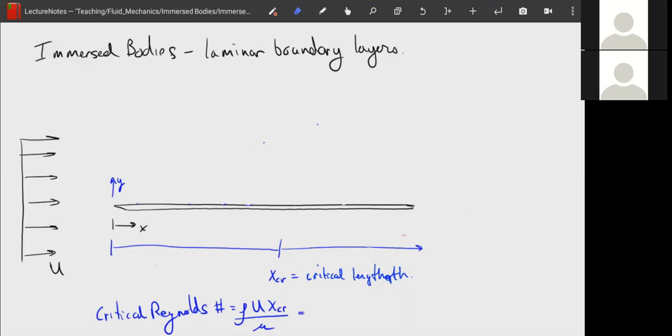So let's assume here we have a flat plate moving through a uniform flow here with a speed u. And if we were to look at velocity profiles along this plate when we start at the very beginning...